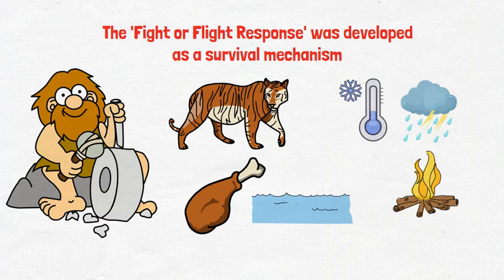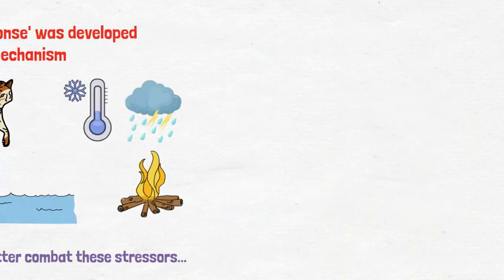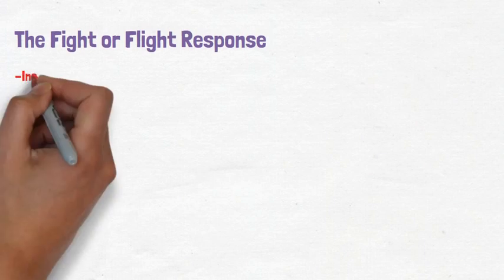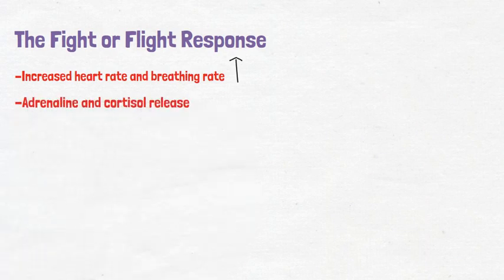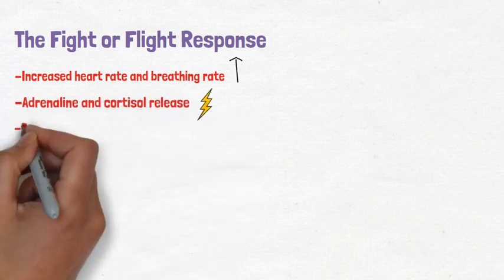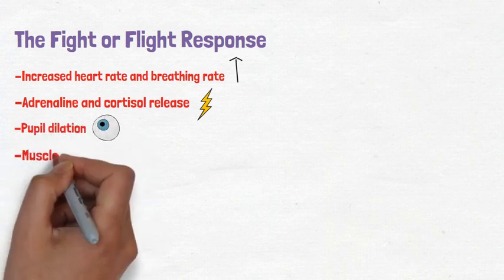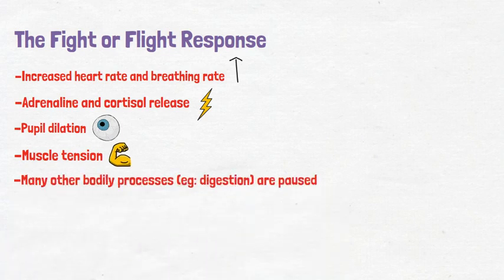The fight or flight response was developed to best prepare our ancestors to combat these stresses through a series of physiological and hormonal responses. The components include increased heart rate and breathing rate to increase energy and oxygen levels, adrenaline and cortisol release to increase energy levels, pupil dilation to give you tunnel vision on the specific threat, muscle tension to prime the body for action, and bodily processes such as digestion and tissue repair are paused so that the body has more energy available.